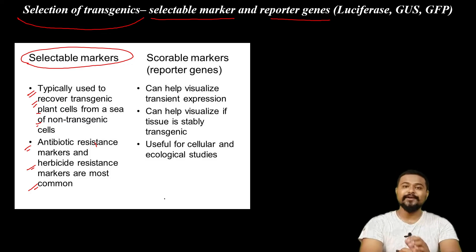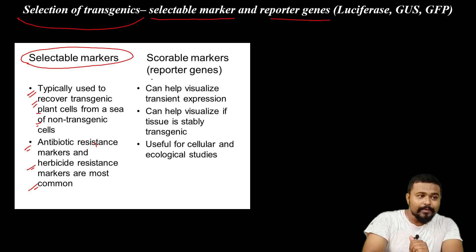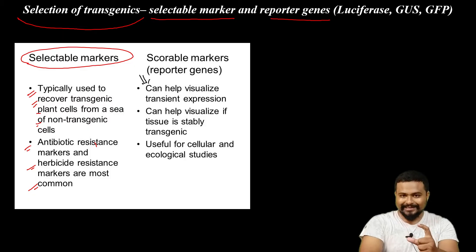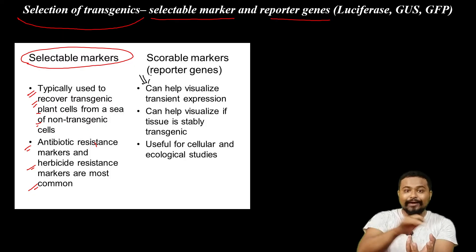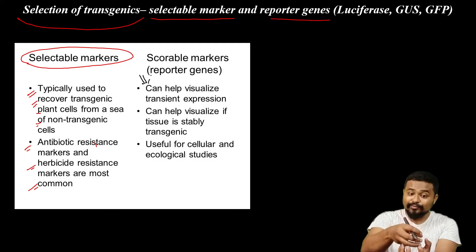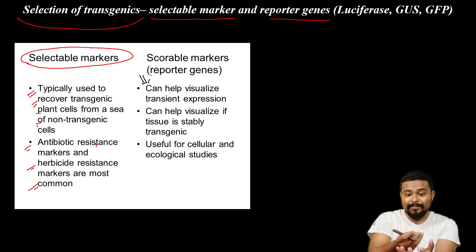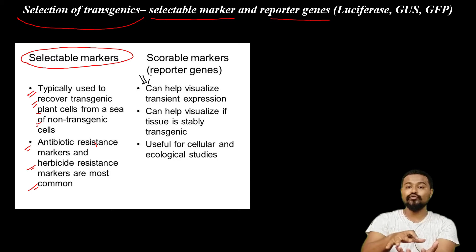Scorable markers, or reporter genes, are very important. Scorable markers are used to visualize transformed cells directly. How does the cell emit light, or how does it change color? Directly, you can visualize the cell using the scorable marker.